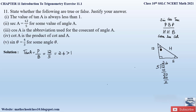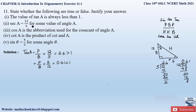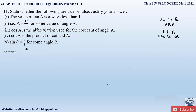Now if we change the acute angle to the other acute angle in the triangle, the perpendicular and base swap. So tan A becomes 5/12. Dividing 5 by 12 gives approximately 0.41, which is less than 1. So tan A can be either greater than 1 or less than 1. Therefore, the statement 'the value of tan A is always less than 1' is false.